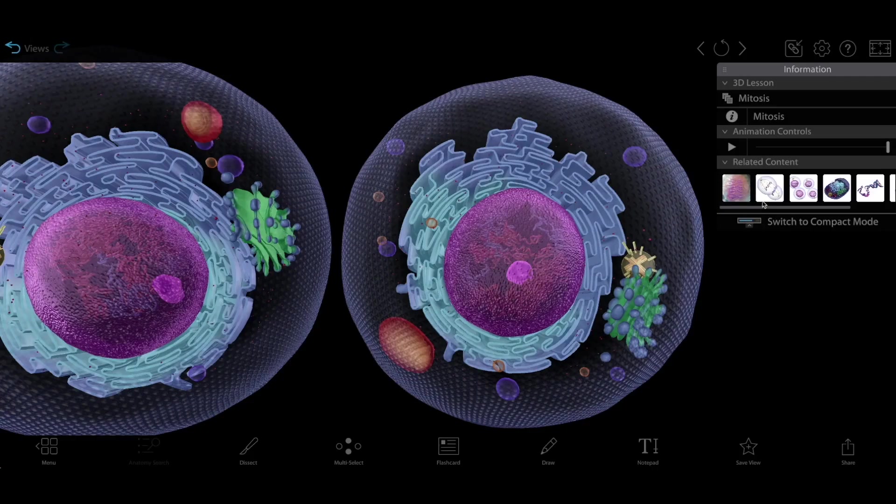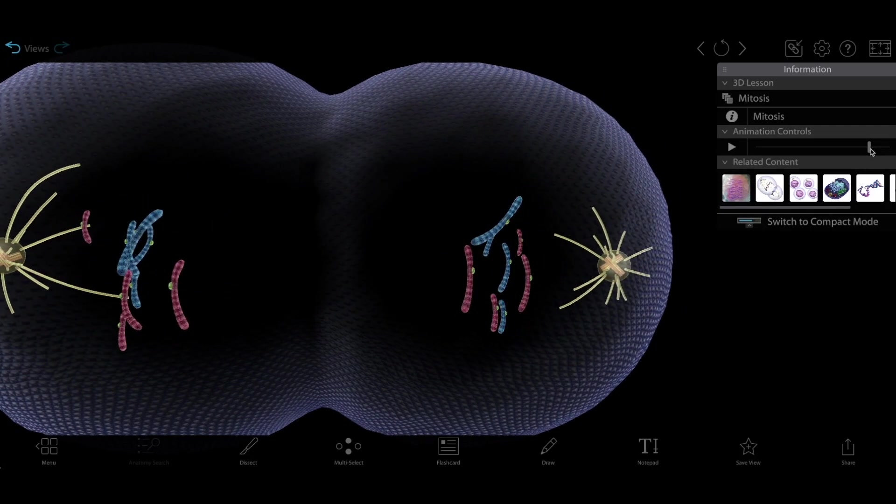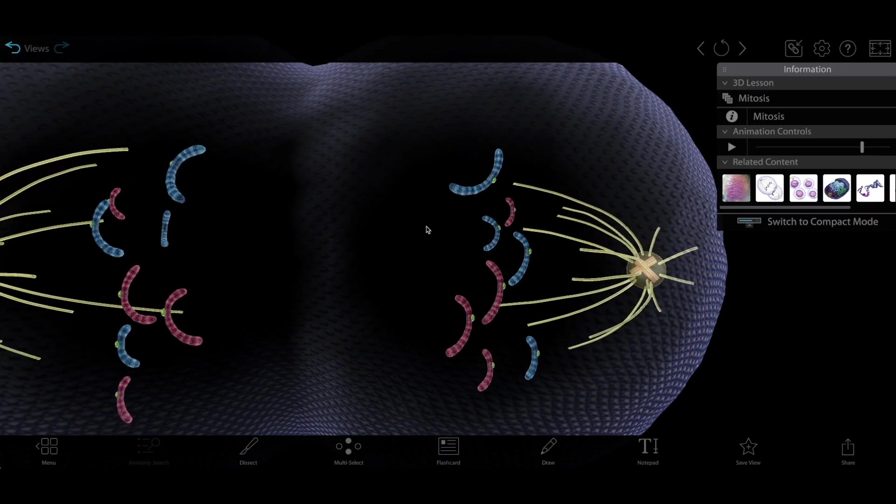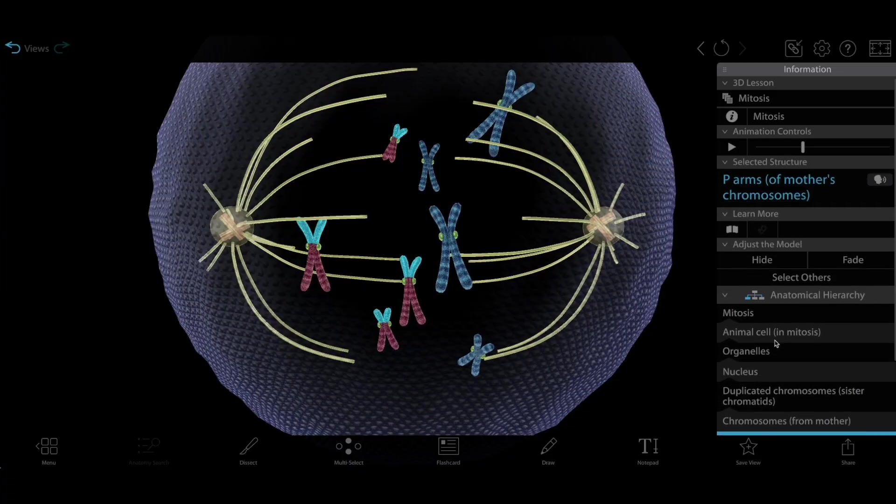You'll also notice that each of the daughter cells has the same number of chromosomes as the parent cell, eight total. Remember, the parent cell's chromosomes replicate at the beginning of mitosis. But did you catch that half of the chromosomes in this model are red and half are blue? That's on purpose.